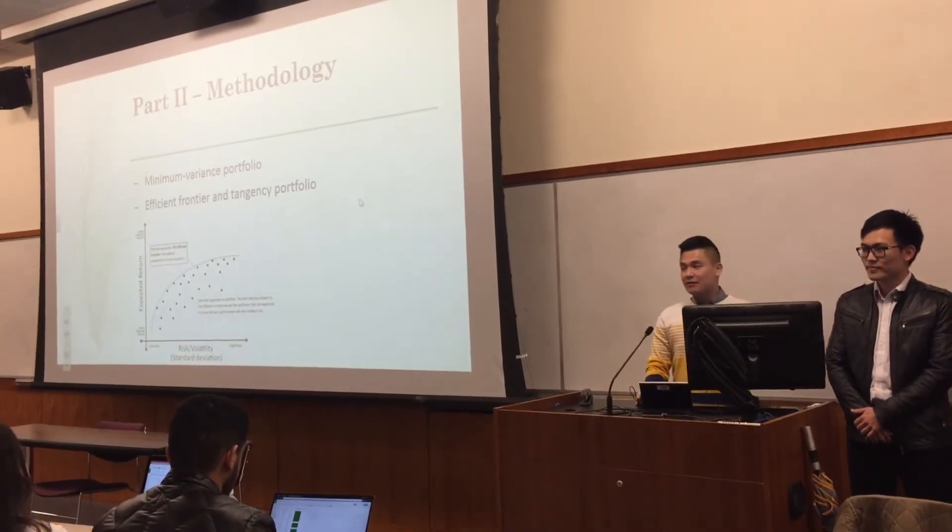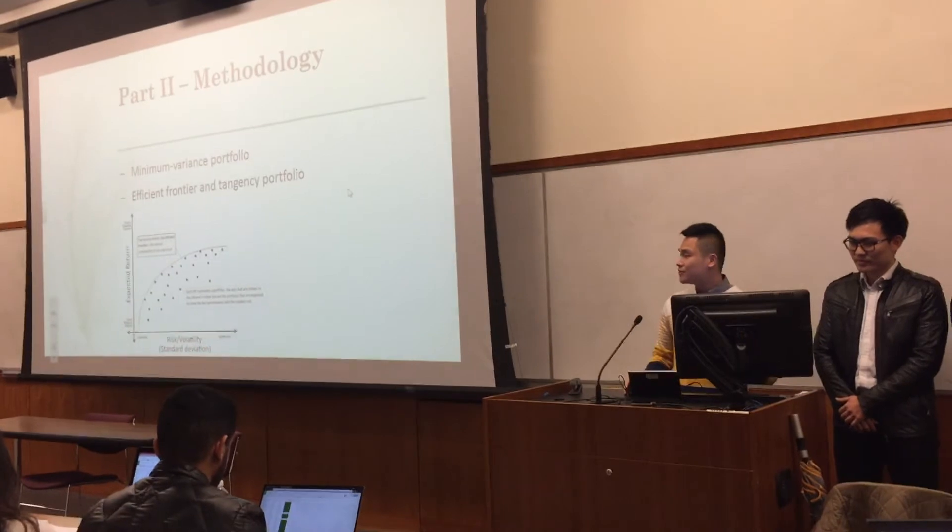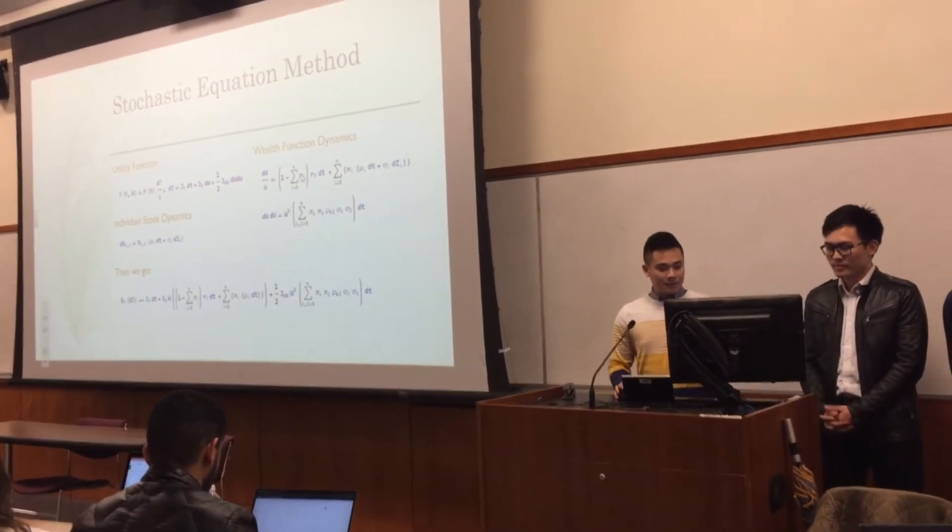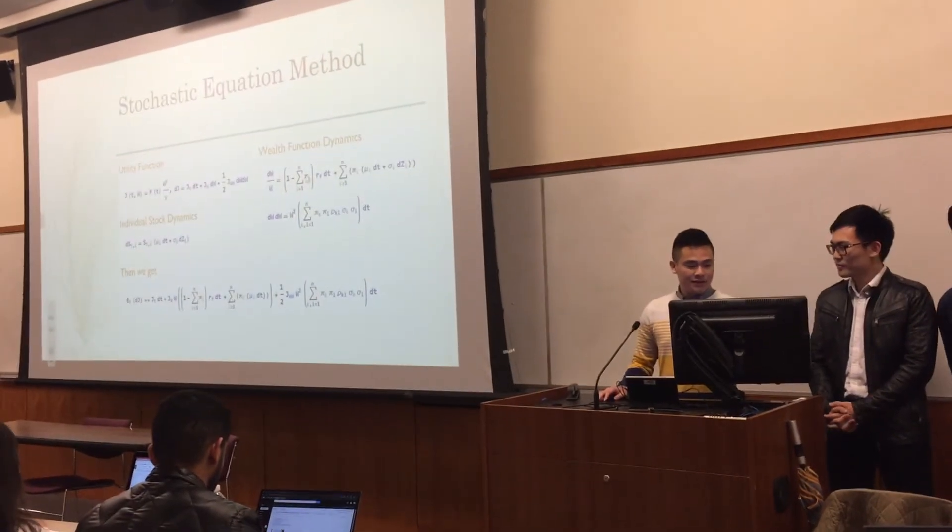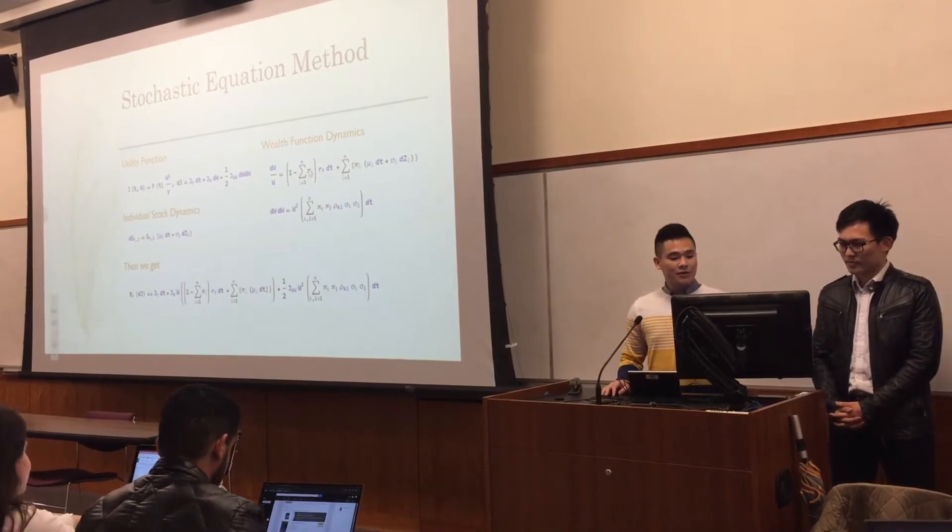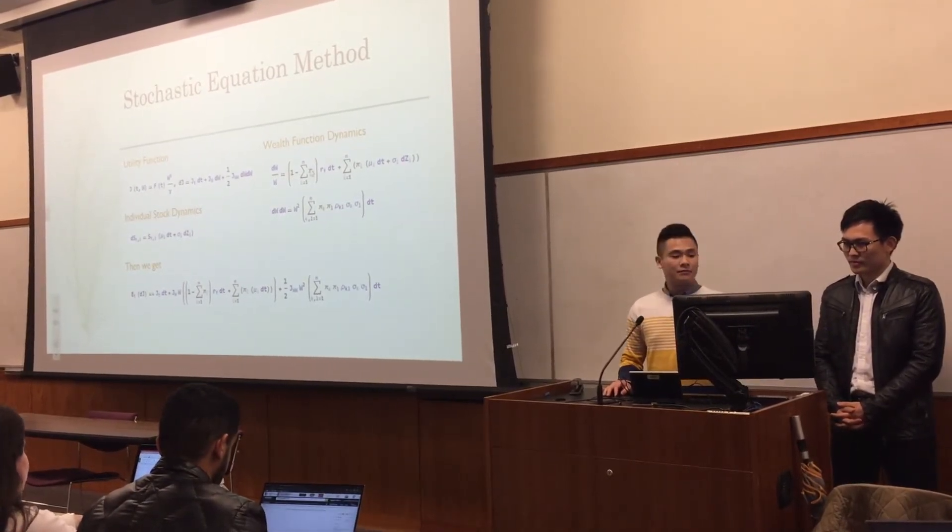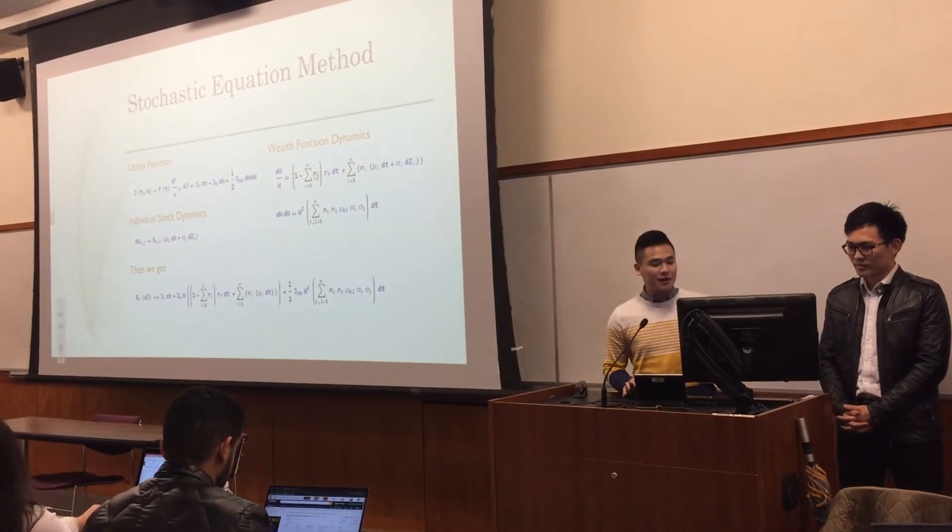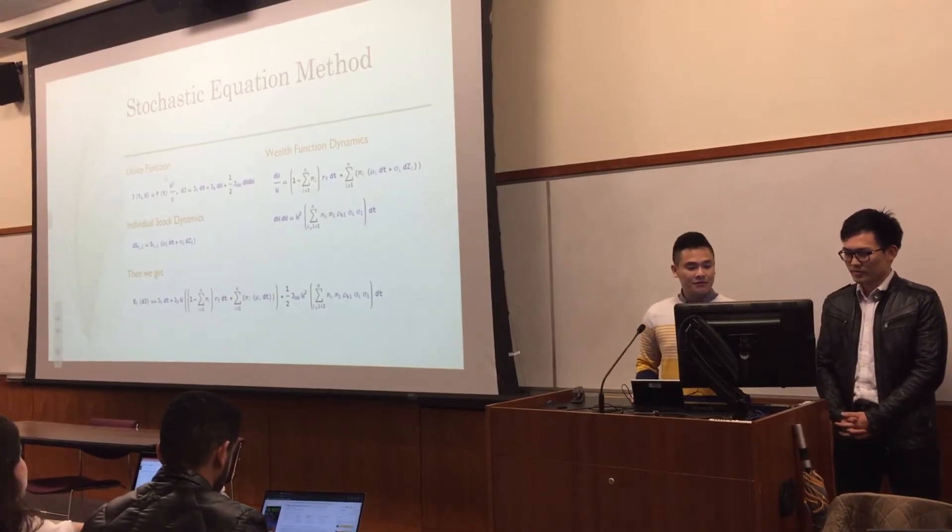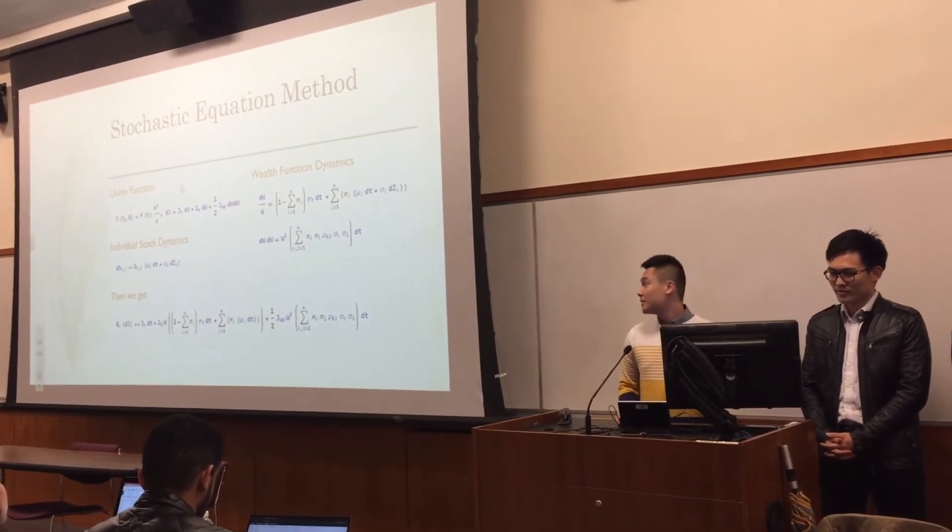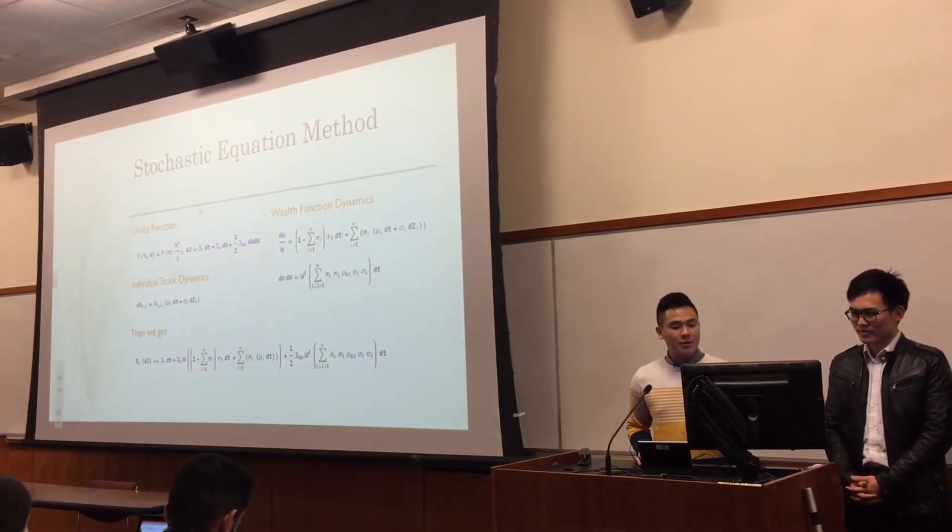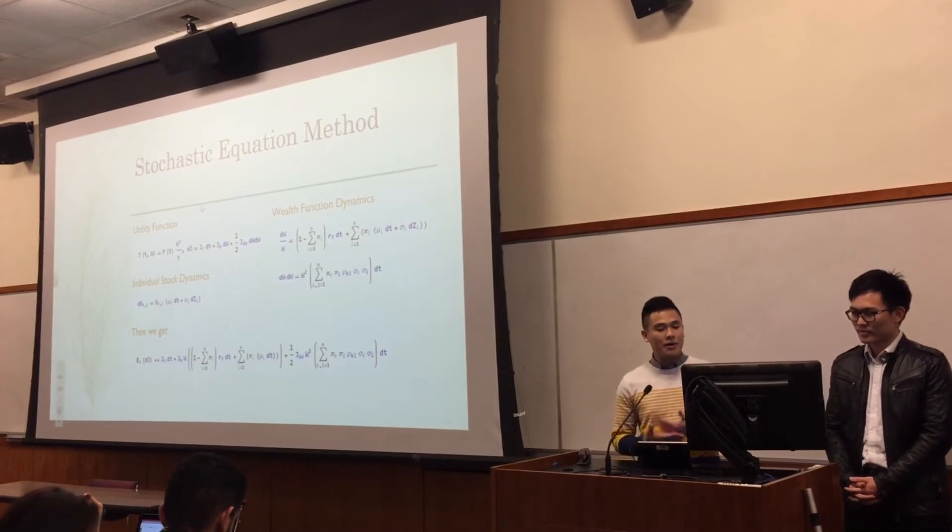In order to get the optimization weights, we use two ways to calculate. The first way is the mathematical way. The biggest difference between this method and the programming method is we assume all the stocks follow geometric Brownian motion. Another trick I play here is I set a utility function, then we have the parameter gamma. We can adjust this parameter to compare our weights with the weights that we got from the programming method.